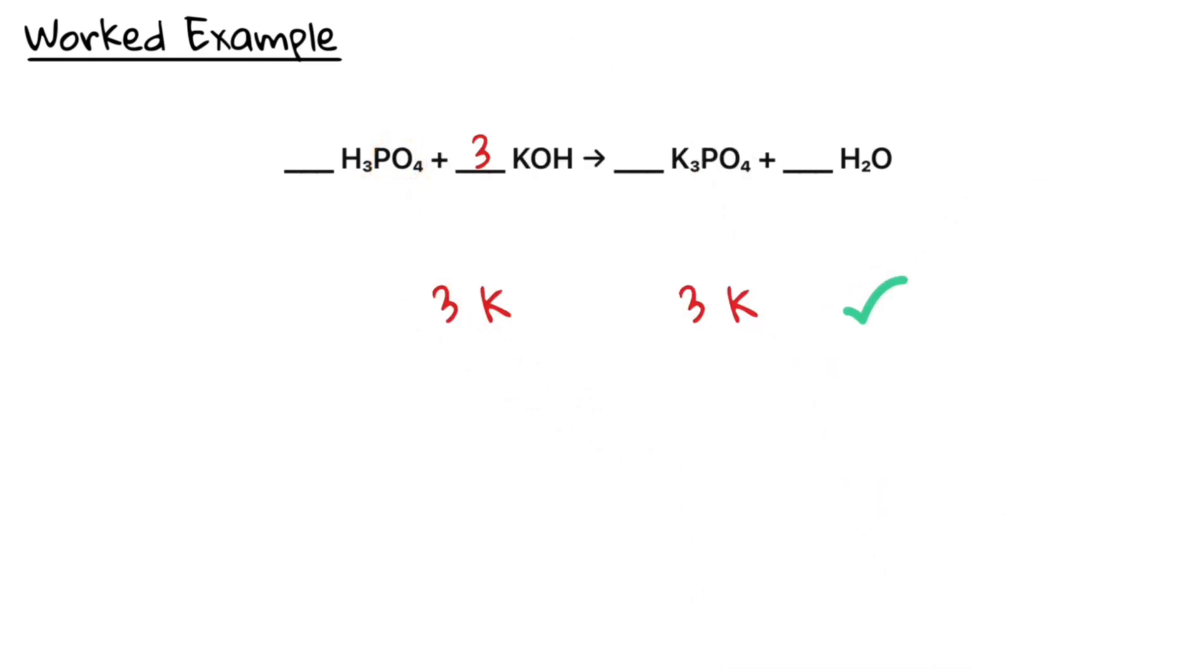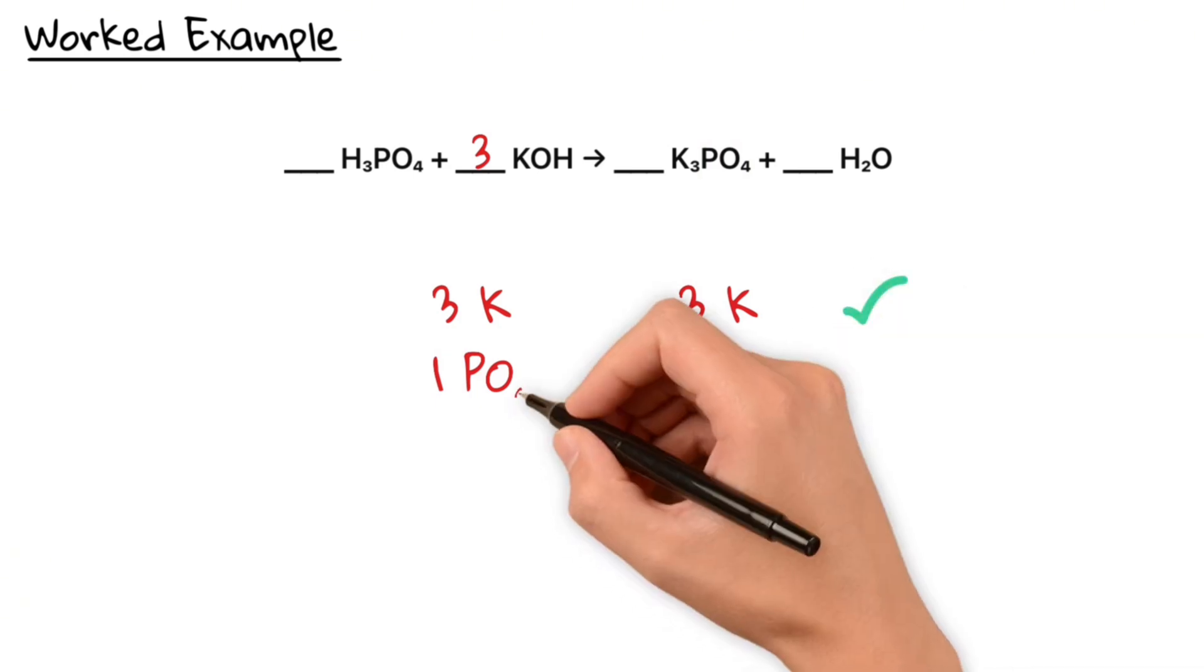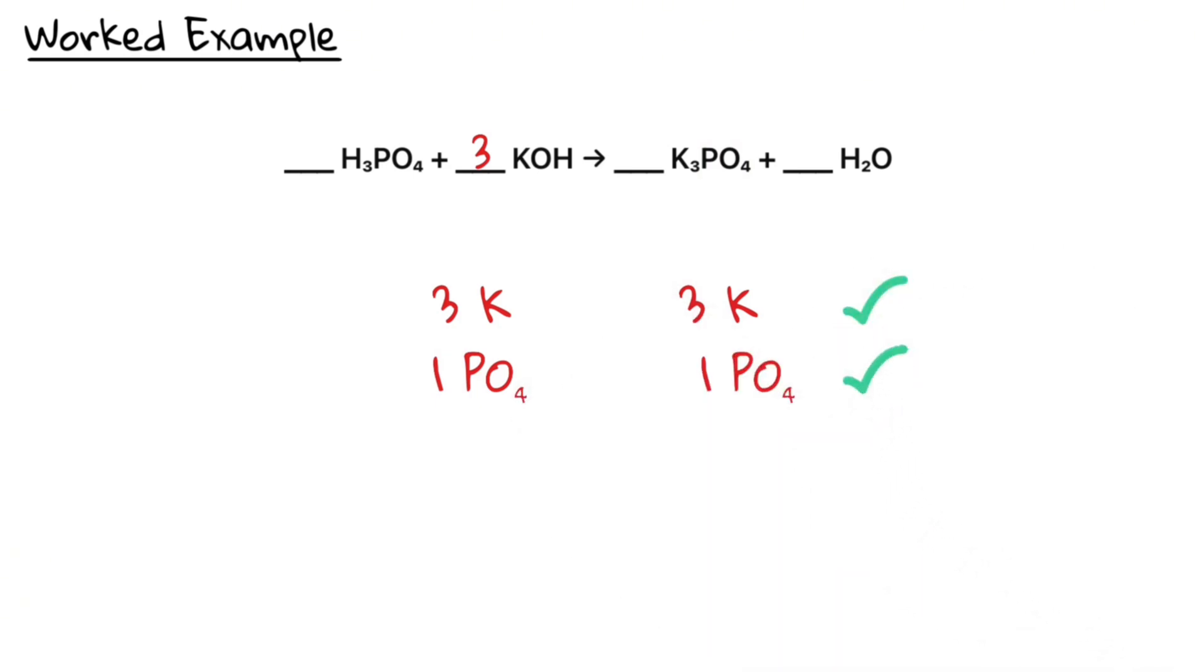Next, we look at the phosphate ions. Phosphate is a polyatomic ion. It stays together in both reactants and products, so we treat it as one unit. There is one PO4 on each side, so that's already balanced.